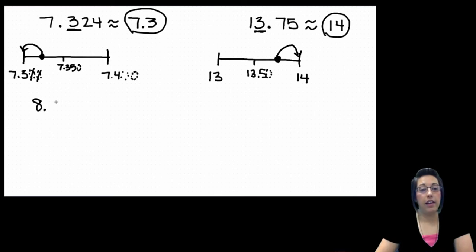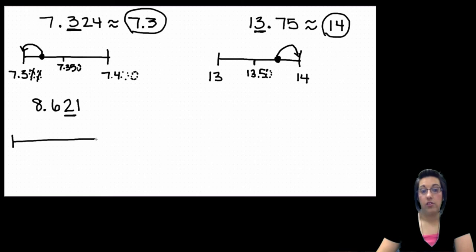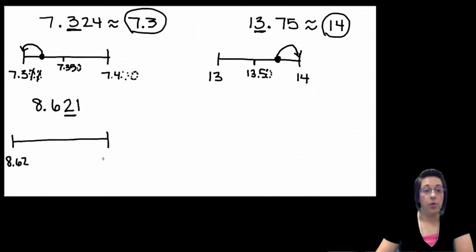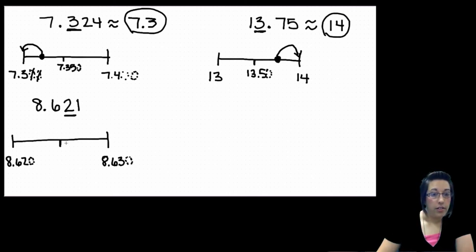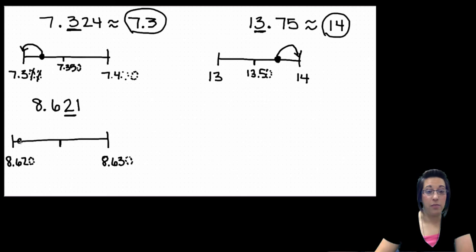Let's look at the number eight and six hundred twenty-one thousandths. I want to round to the nearest hundredth — that would be where the two is. I draw my number line and look at my options. It could stay the same: eight and sixty-two hundredths, or it could go up one to eight and sixty-three hundredths. We've got to find halfway in between, so let's put our invisible zeros in. Six hundred and twenty-one thousandths — I've got six hundred twenty-thousandths, and I know that's going to be one past it, so I'm going to round back, which would be eight and sixty-two hundredths.